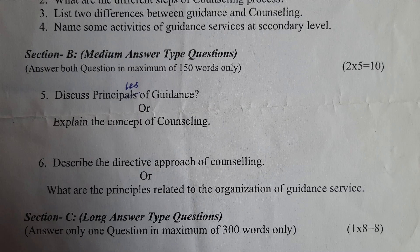Section B: Medium Answer Type of Questions. Answer both questions in a maximum of 150 words only. 2 x 5 is equal to 10 marks. Question 5: Discuss principles of guidance, or explain the concept of counseling. Question 6: Describe the directive approach of counseling, or what are the principles related to the organization of guidance service?